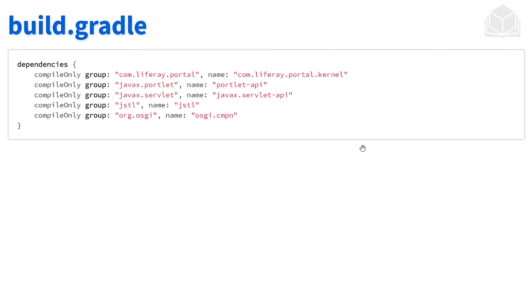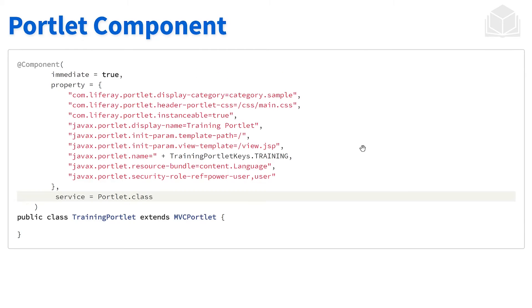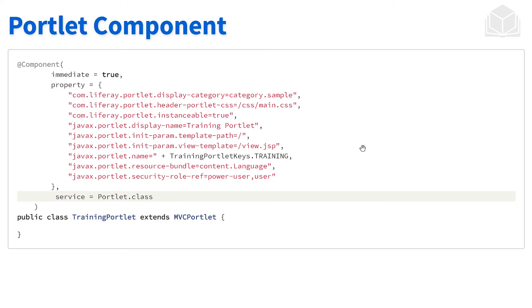The build.gradle contains all the dependencies needed to properly compile and build this portlet module, which is a little different from a typical Java standard portlet. Within the portlet component, you'll notice that the property attribute at the top has a number of properties that might look familiar. One thing to note is that there is no portlet.xml when dealing with portlet components or Liferay portlet modules — every attribute typically defined in portlet.xml is defined within that property attribute.